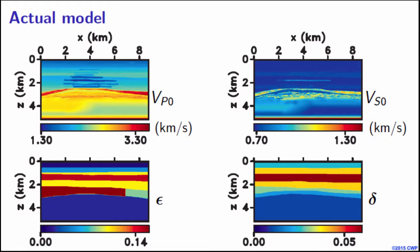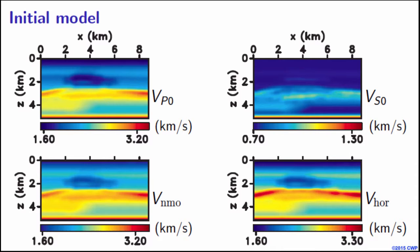Now this is the initial model we used. So from here on, I am going to show you only the model in terms of the model parameters, which are velocities. I am not going to show you epsilon and delta anymore. So you might notice that we have not really done a very heavy smoothing, so the initial model is not very far from the actual model. And one of the reasons is because we want to see what happens, like in the best case scenario, since we are doing a multi-parameter inversion, are we really able to get some more information out of the reflection coefficient information present in the data.